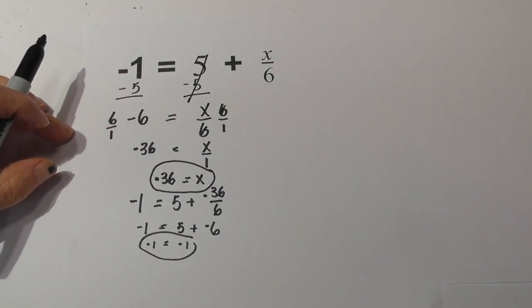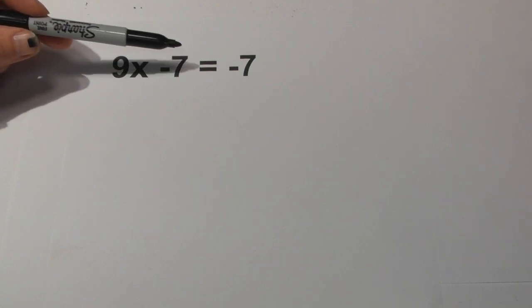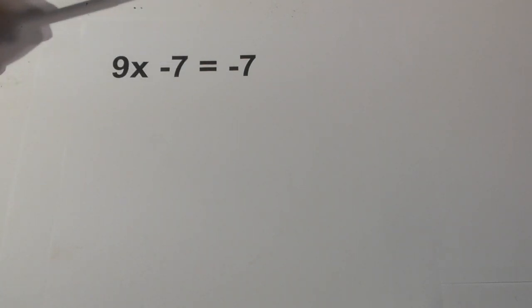Now let's look at our next problem. This problem that we're going to solve is 9x minus 7 equals negative 7. And we have negative numbers. So let's get started.